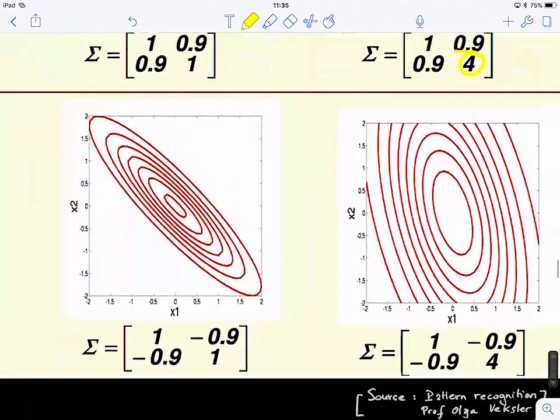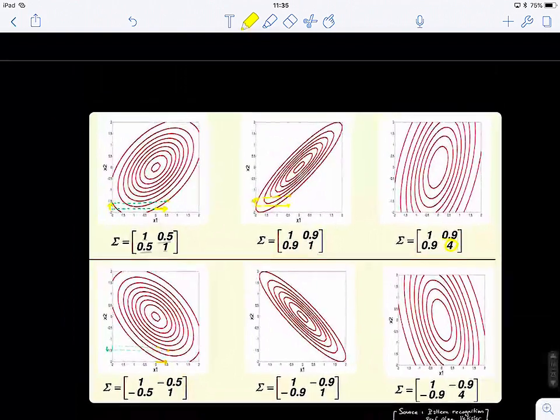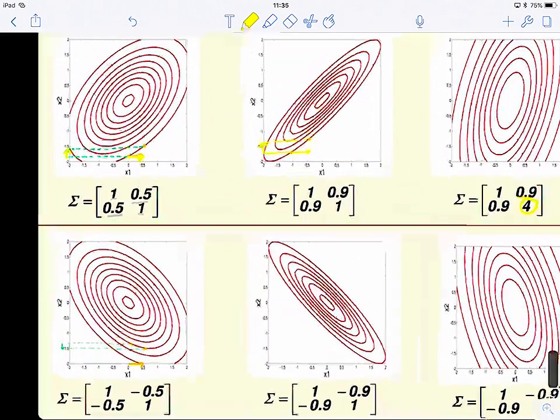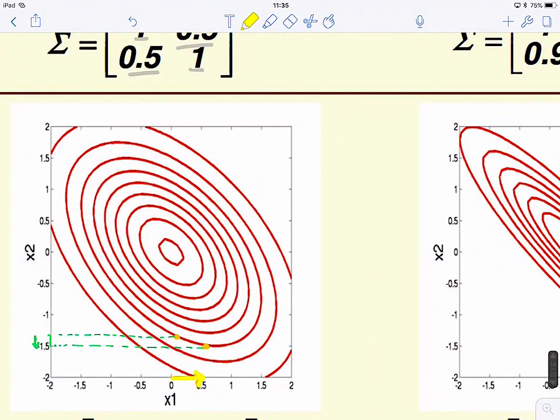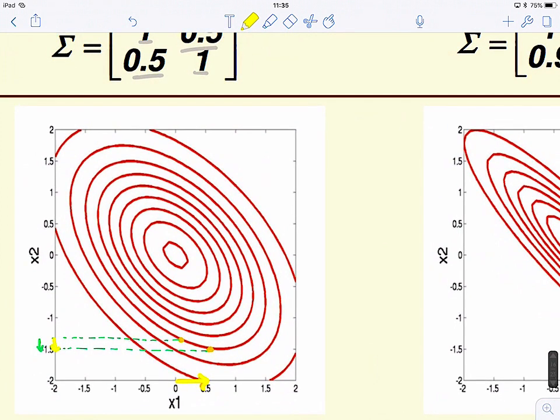Now, we have the other case where first, like the first row is like positive, now it's negative, so negative covariance, and it's quite similar. So you can see here, when we have an increase by one, we have a decrease by 0.5. That's negatively correlated or a negative covariance.